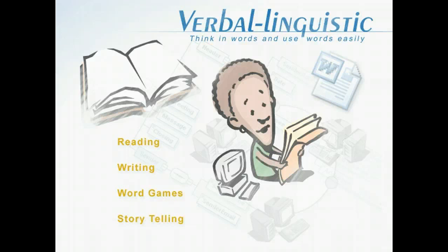The first intelligence type is verbal linguistic. Students with strength in this area tend to think in words and use words easily. They have an affinity for reading, writing, word games, and storytelling. They may also be sensitive to rhythm and order. The technology that would best motivate such students include word game programs, word processing programs, label making programs, and programs where students read and answer questions.